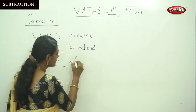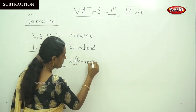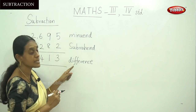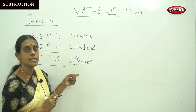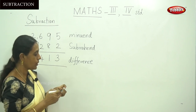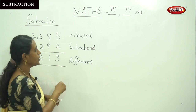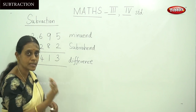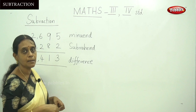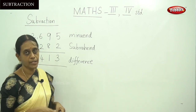In a subtraction sum, the terms are: the top greater number is called the minuend, the number to be subtracted from the greater number is called the subtrahend, and the final answer is called the difference.